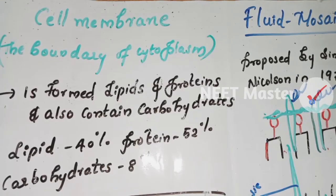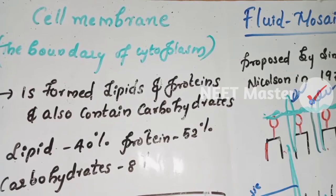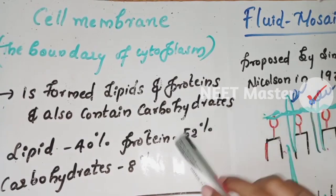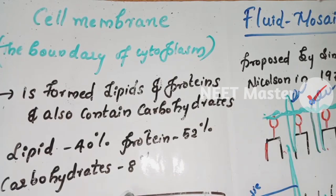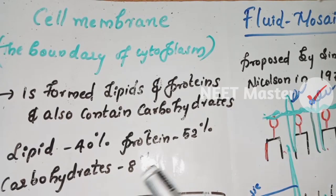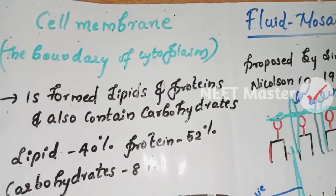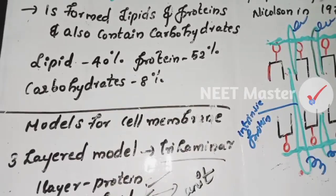The plasma membrane is formed of lipids and proteins. It also contains carbohydrates. Now we will use RBC cells as an example. The ratio is: lipids 40%, protein 52%, carbohydrates 8%. Now we will learn some models.